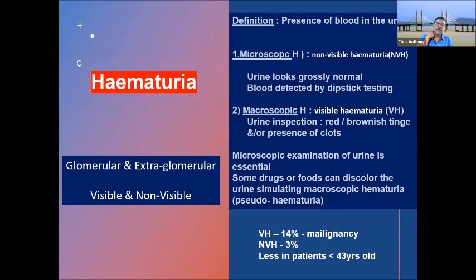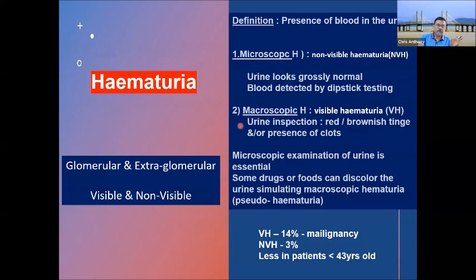Today we talk about hematuria. The definition of hematuria is the presence of blood in the urine. There are two main types: microscopic, also known as non-visible hematuria, where the urine looks grossly normal but blood is detected on urinalysis; and macroscopic or visible hematuria, where you can visibly see blood in the urine, which appears reddish or brownish with possible blood clots.